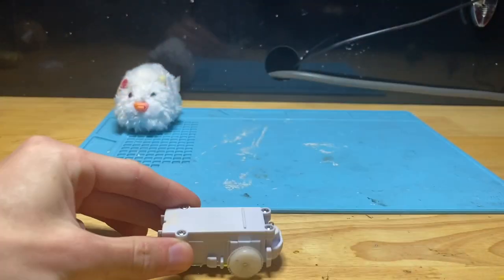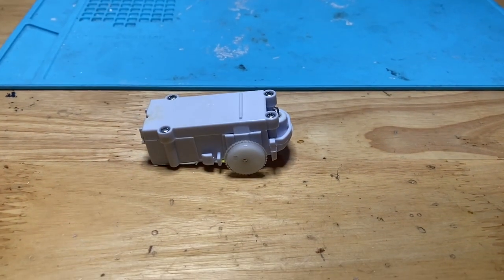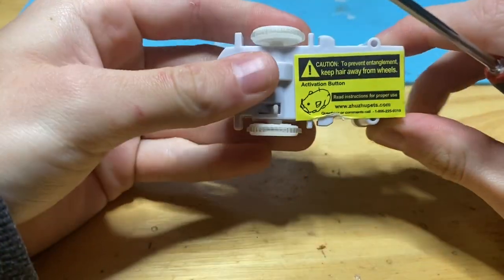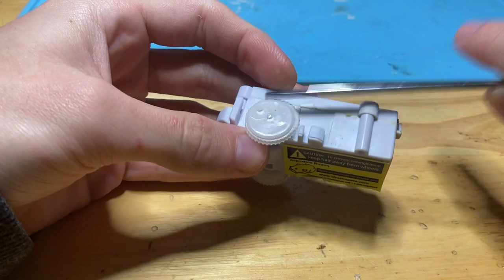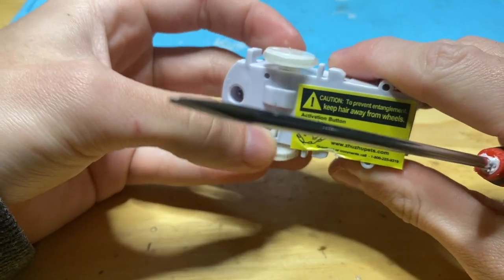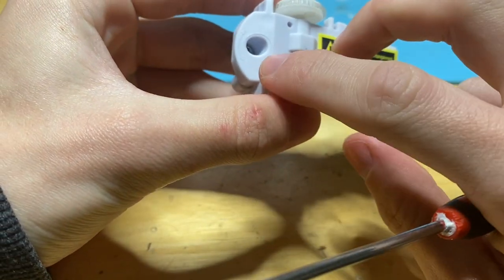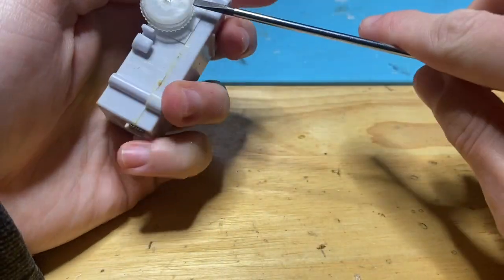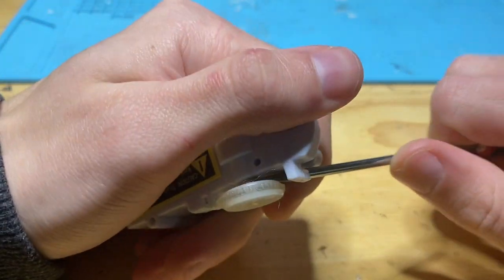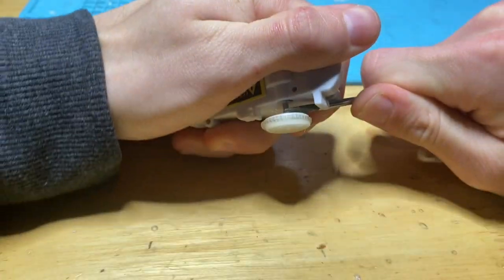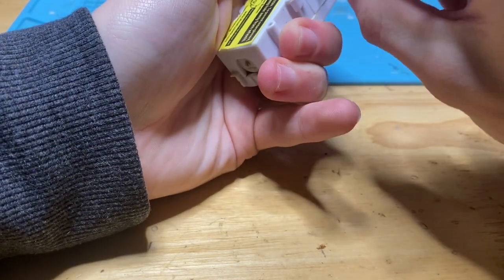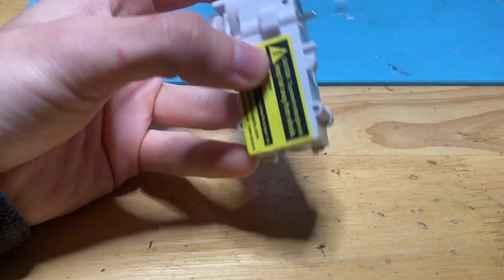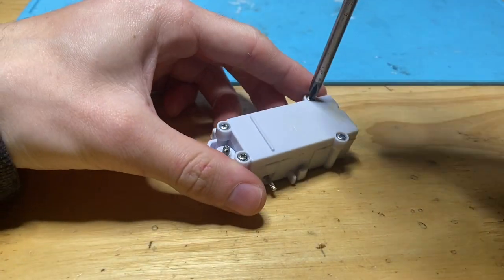The first step in fixing your Zuzu Pets gearbox - I'm going to lower the camera here so you can see - is I like to remove this wheel, not this one, but the one that's not on the same side as the piece that pops up. I take a flathead screwdriver and gently pry underneath. Some are harder, and there'll usually be hair trapped on that axle too, so it's good to remove that. That makes it a lot easier moving forward.